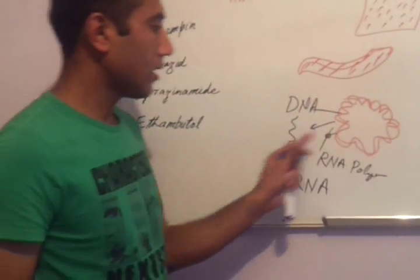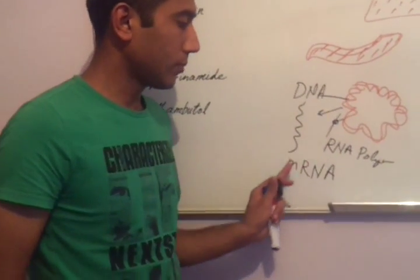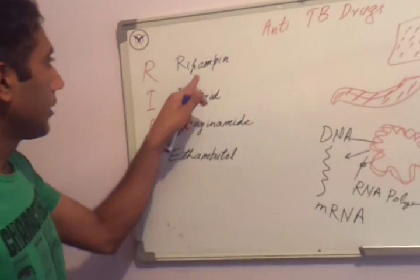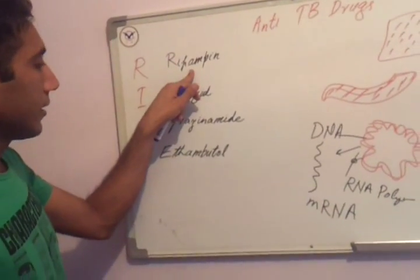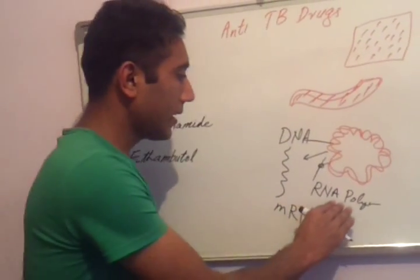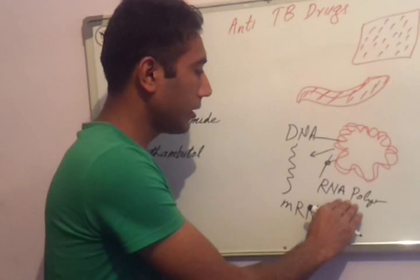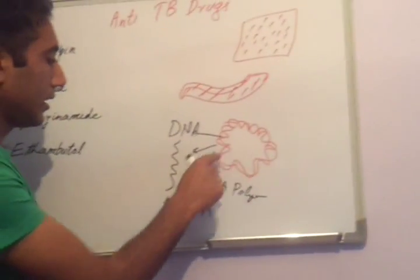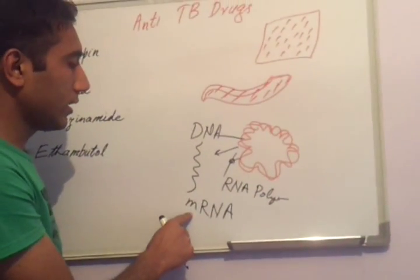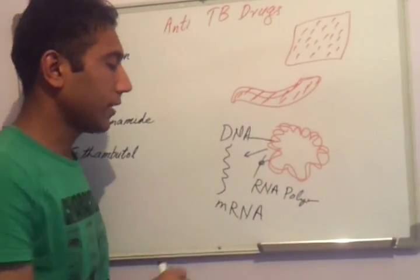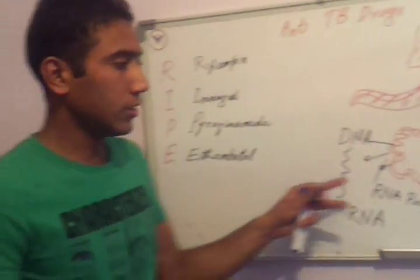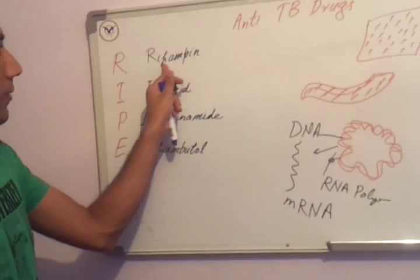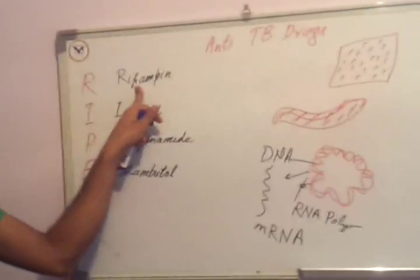When RNA molecules are produced from DNA, this process is called transcription. Rifampin inhibits DNA-dependent RNA polymerase, so bacteria cannot produce messenger RNA from DNA — the process of transcription is inhibited. This is the mechanism of action of rifampin.